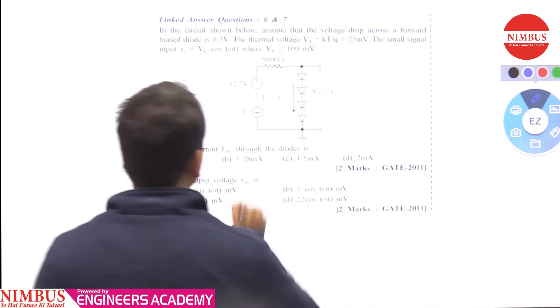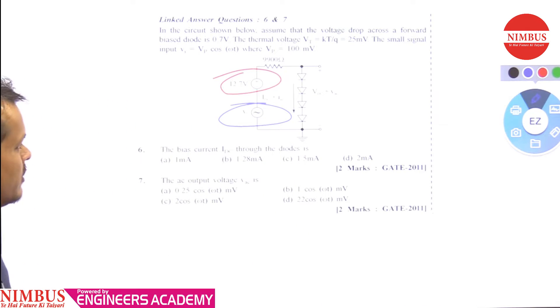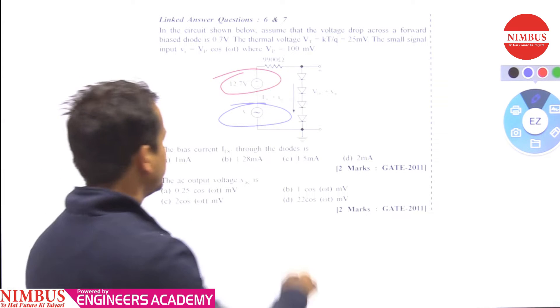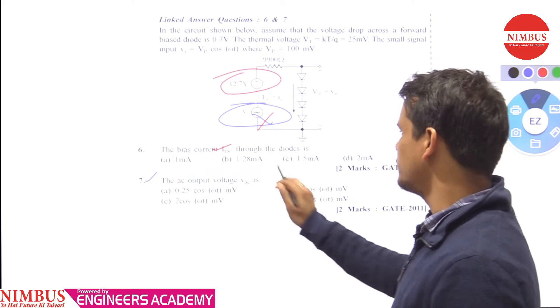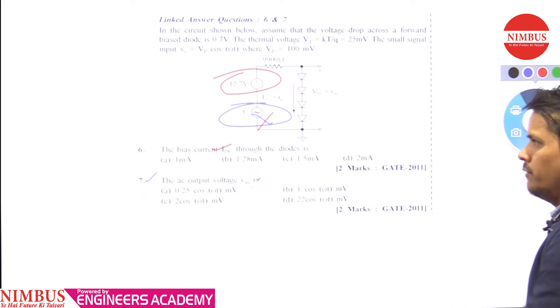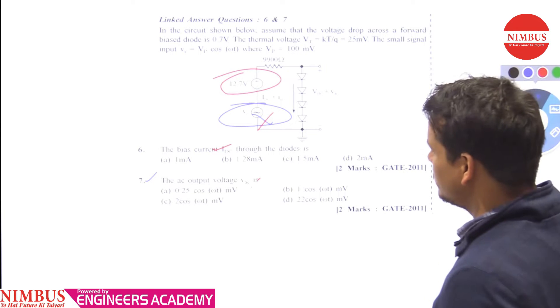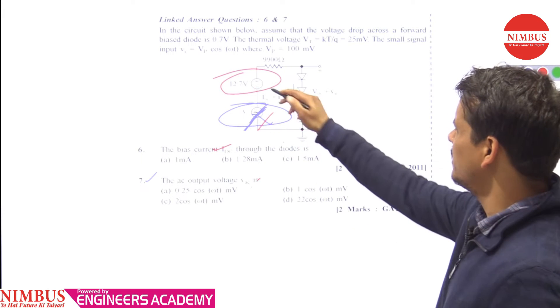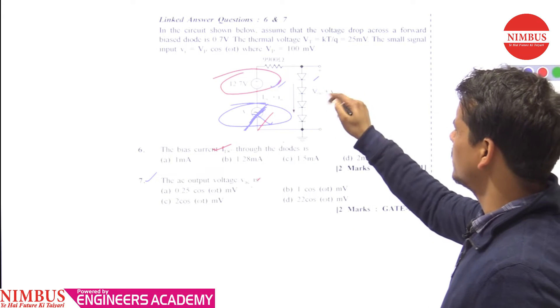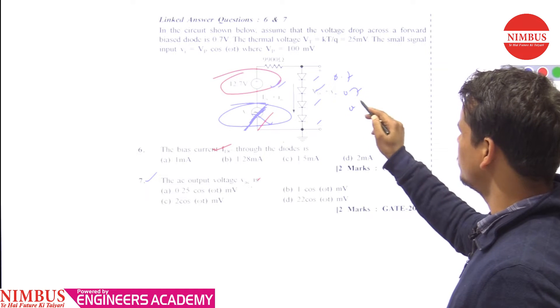We have both DC and small AC signals here. To find the DC current and AC voltage, we need two separate analyses. For DC analysis, we remove the AC signal. When we have 12.7V supply, each diode will have a 0.7V drop.